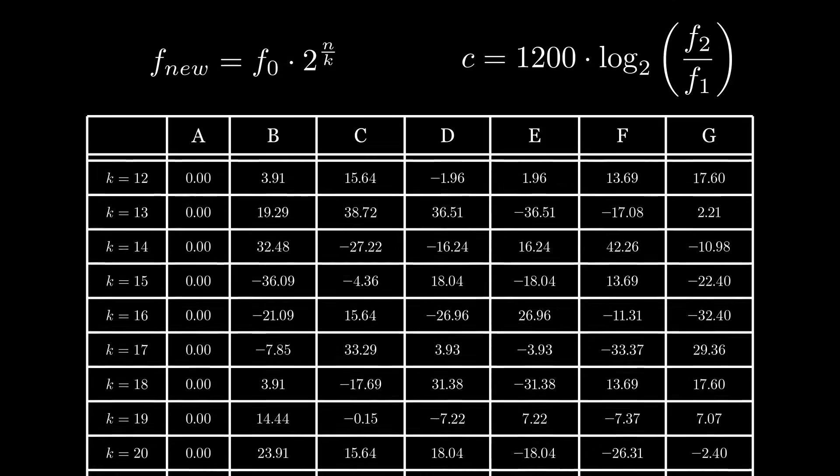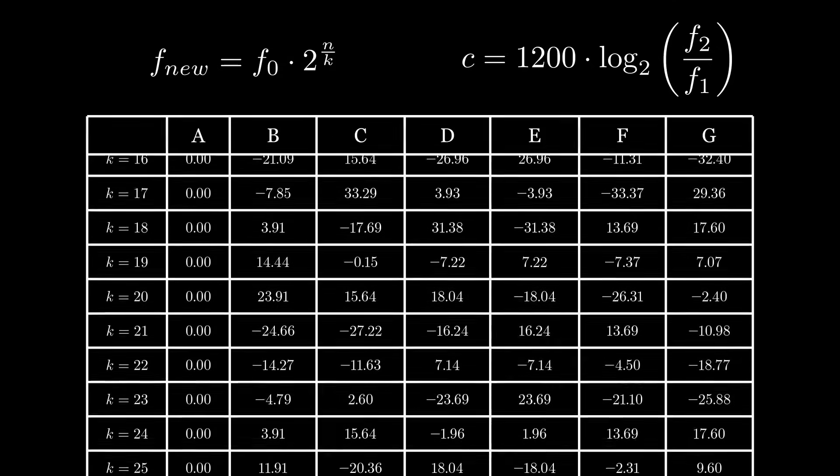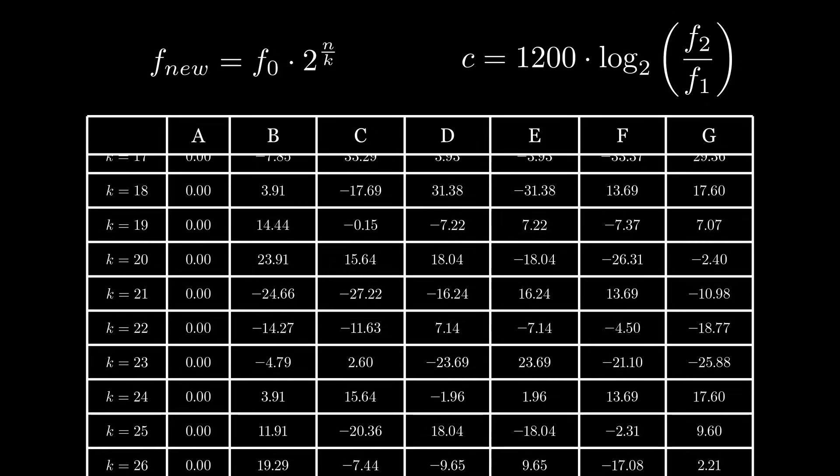13? Worse. 14? Also worse. 15? 16? 17? 18? Everything worse. 19? Finally, a worthy opponent. The second, fourth, and fifth are worse than our 12 key system, but the rest is a bit better. Now, we approach a territory of pretty many keys per octave. But let's try to search a bit more.